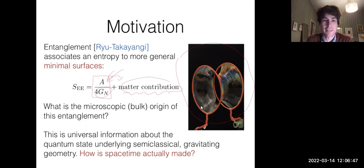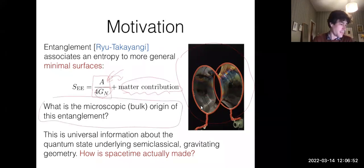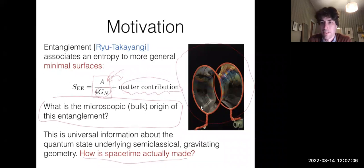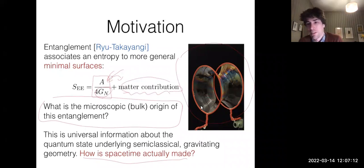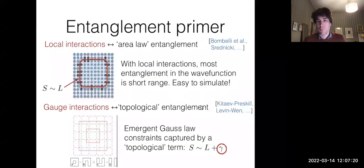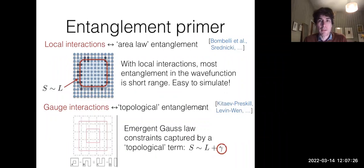The UV divergences of the matter contribution renormalize Newton's constant, so there's not a clean separation between the two contributions — suggesting this is telling us about some kind of microscopic bulk entanglement. What we would learn from answering this is presumably something universal about the kinds of quantum states that can underlie a semi-classical gravitating geometry. We might hope to learn something about how spacetime is actually made.